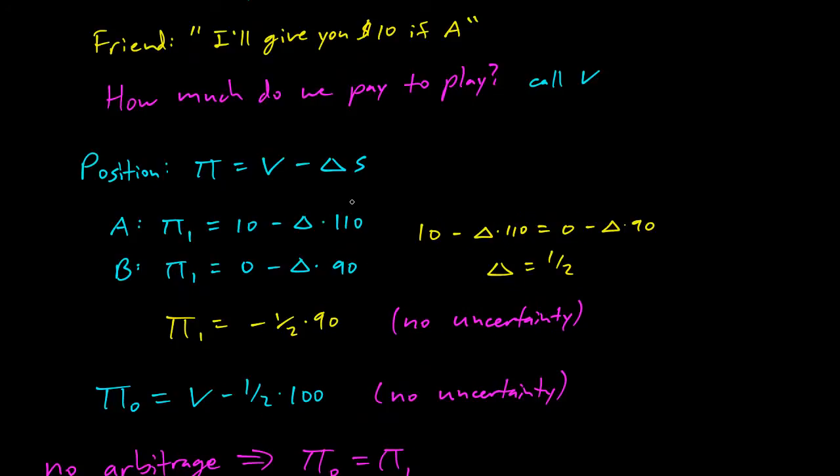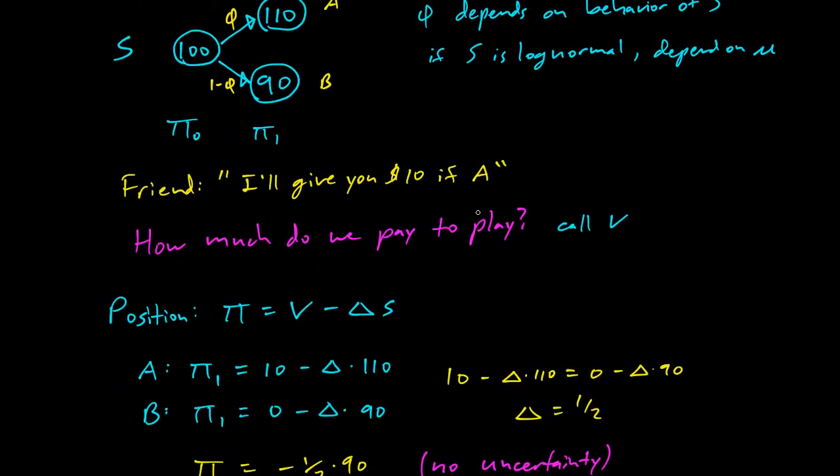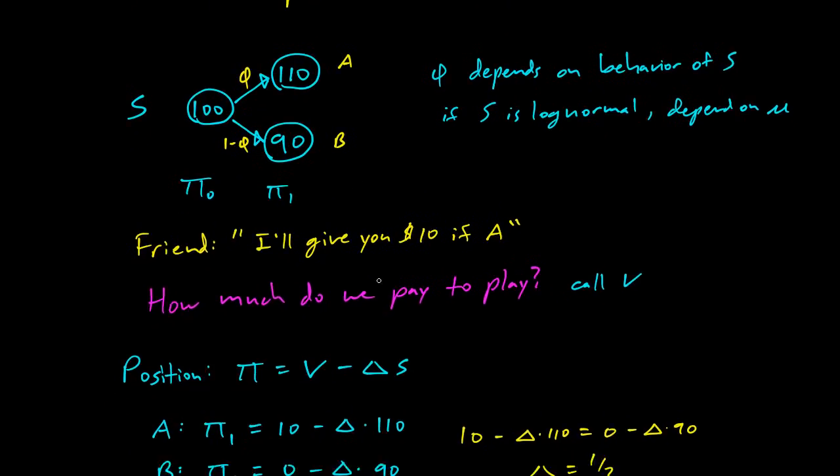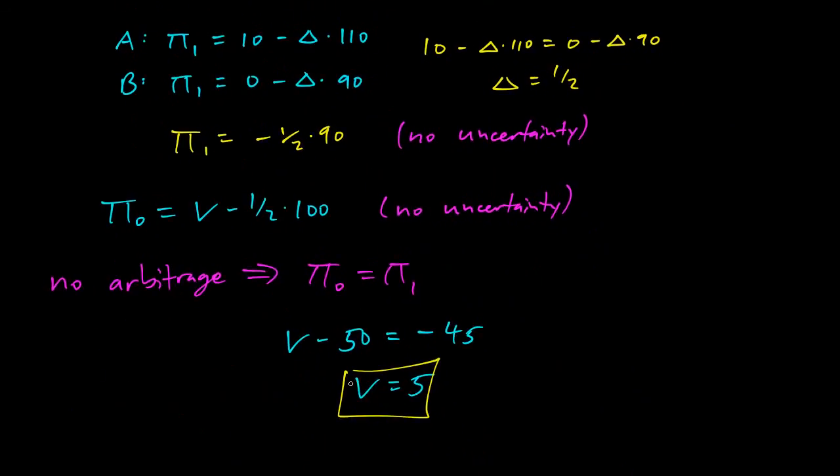So what did we just do? We just showed that for this game where our friend offers to pay us $10 depending on if A or B happens, we just went through and made an argument that shows that we should be willing to pay $5 to play that game.